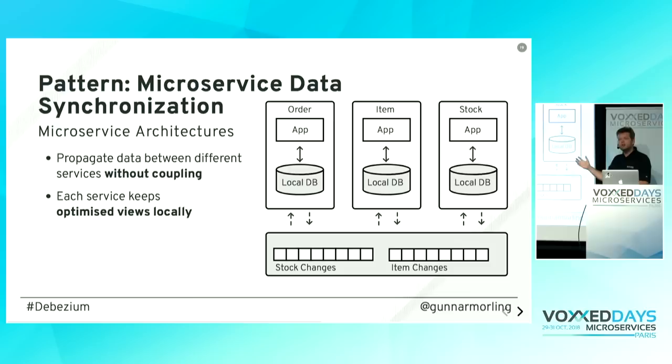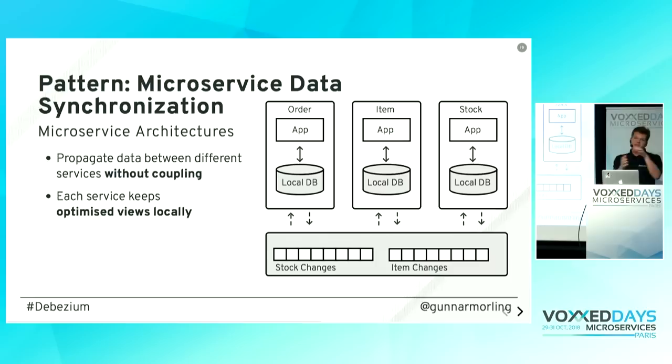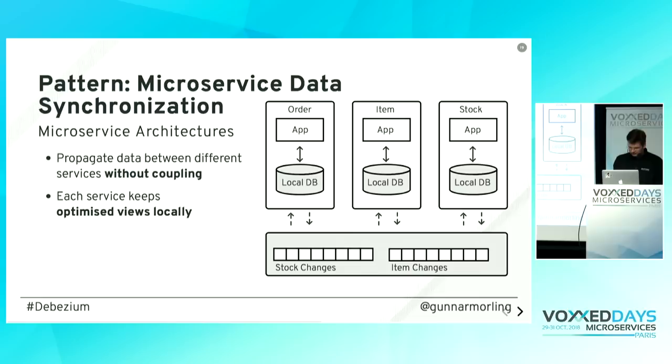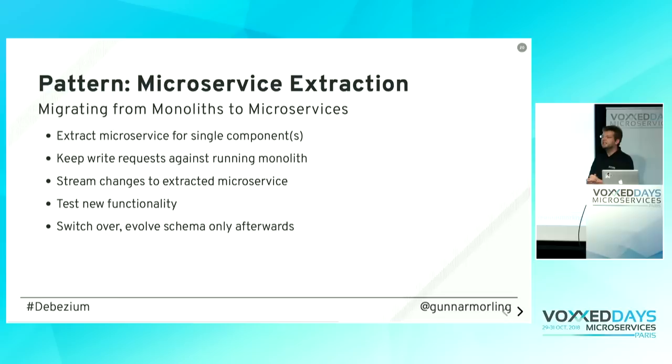The order service might fall behind a little — not always seeing the very latest stock change — but usually that's not a big problem. You need to be prepared to deal with these situations anyway, because in a warehouse something could fall over and you lose items without a transactional database update. Reality isn't transactional, so having this asynchronous approach is a very acceptable solution.